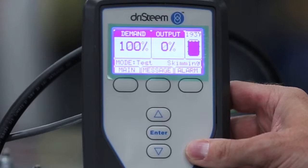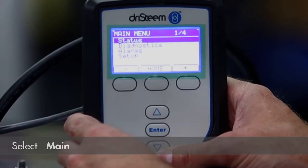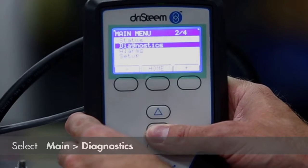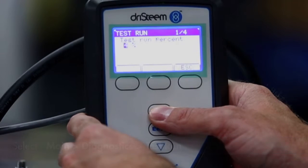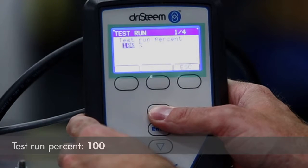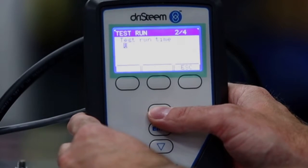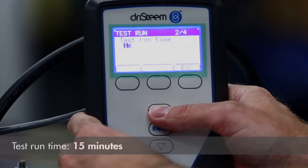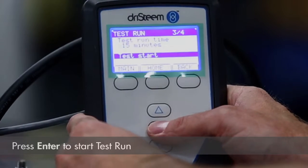Put the humidifier in a 15 minute test run at 100% demand. Here's how. From the home screen select Main, Diagnostics, and Test Run. 100%, 15 minutes, and start the test run.